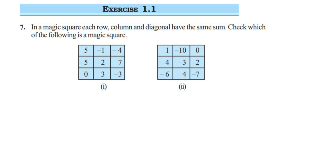Here's a question from Exercise 1.1, seventh question, Chapter Integers of Class 7. The question is: in a magic square, each row, column, and diagonal have the same sum. Check which of the following is a magic square. We have two different squares here. We are going to add up each number in the row, column, and diagonal and see if the sum is equal — after adding everything, the answer should be the same.